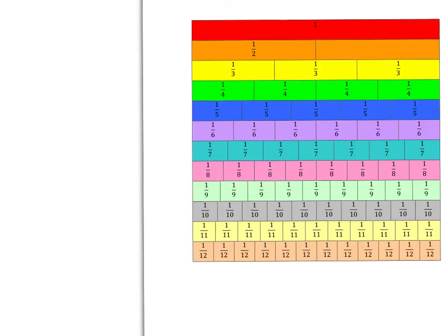We're going to start with our fraction wall, and you've got one in your homework book in front of you which you can use to follow along. What I want to do is look at all the fractions that are equivalent — in other words, that are the same value as one third. We get one third by cutting the strip up into three pieces and just taking one of them. So anything that's as big as one third will be this much. We can put a line down at that place where one third is and see what comes out as equivalent.